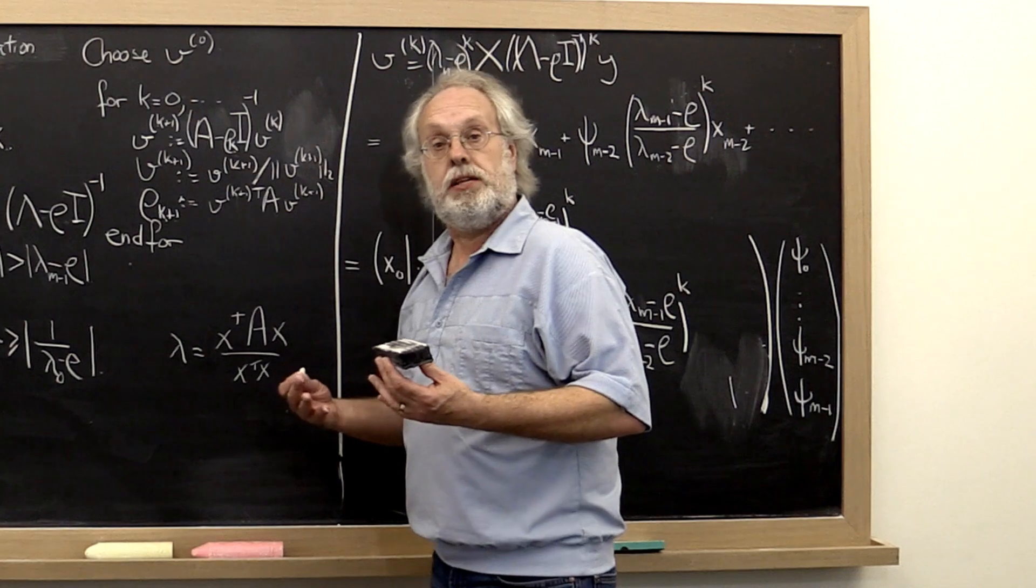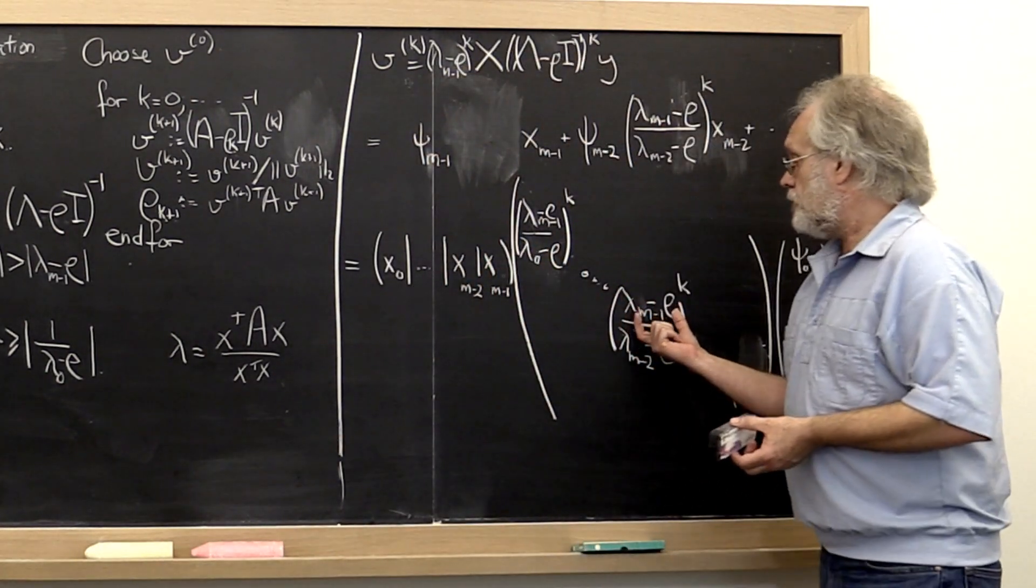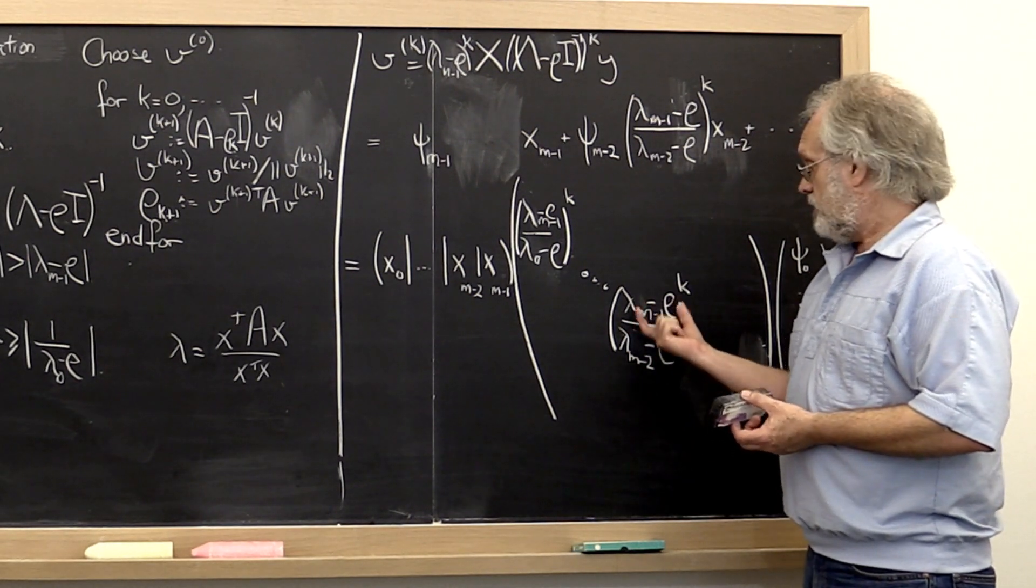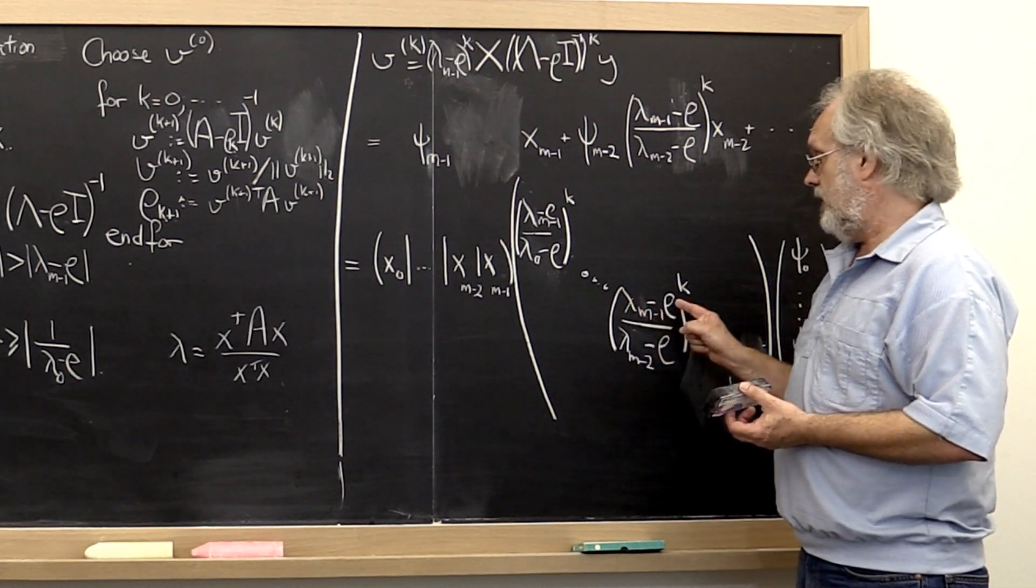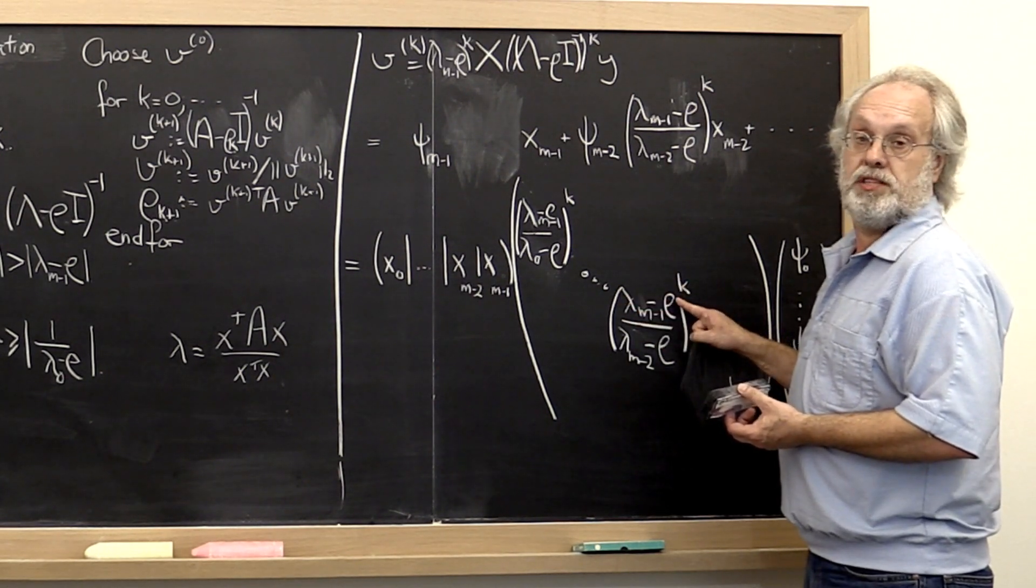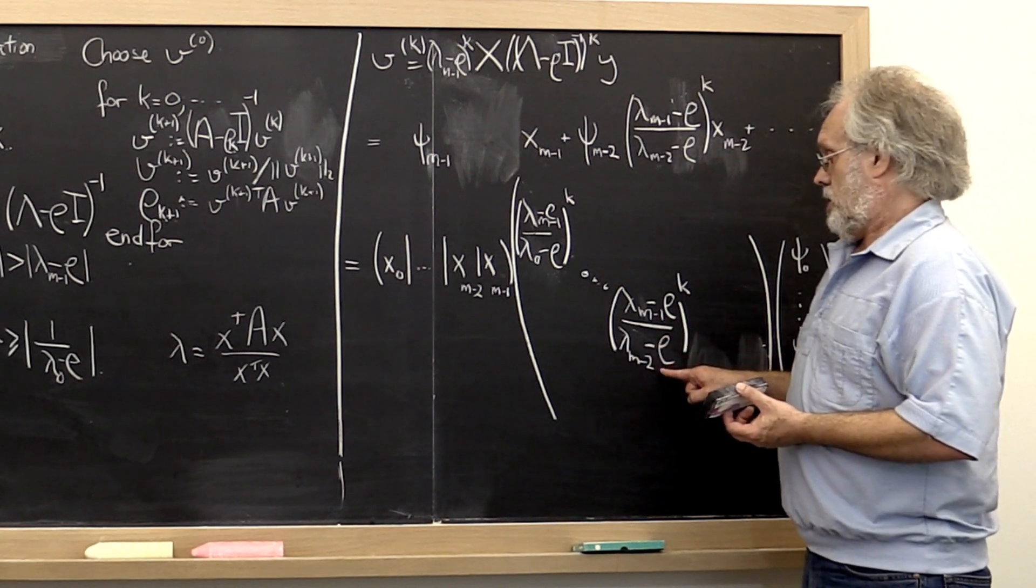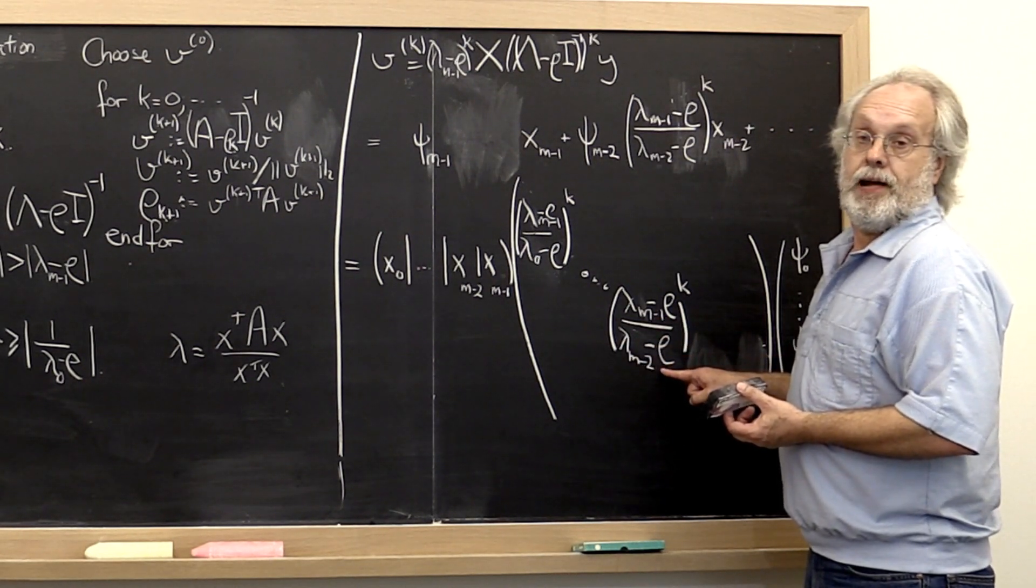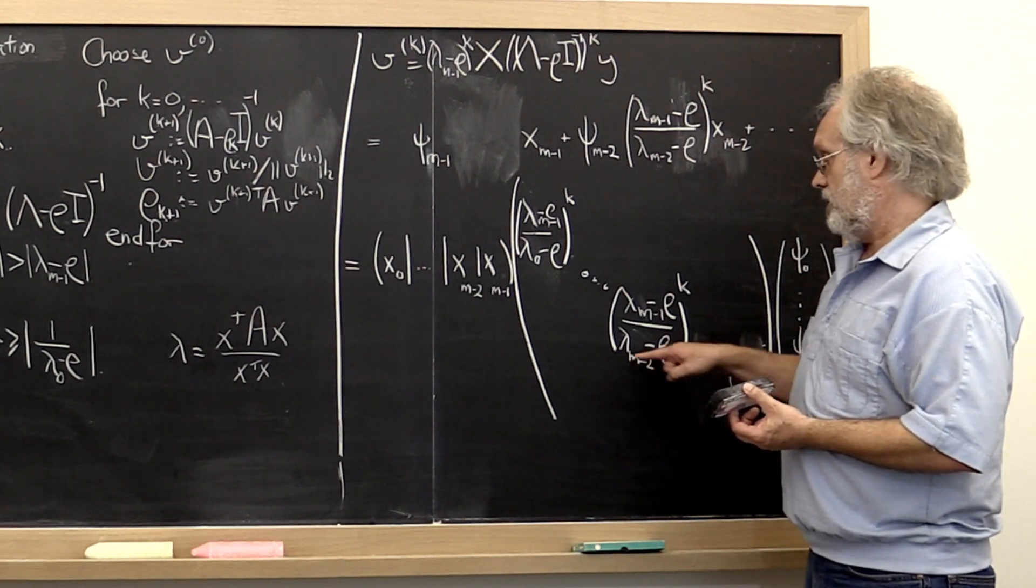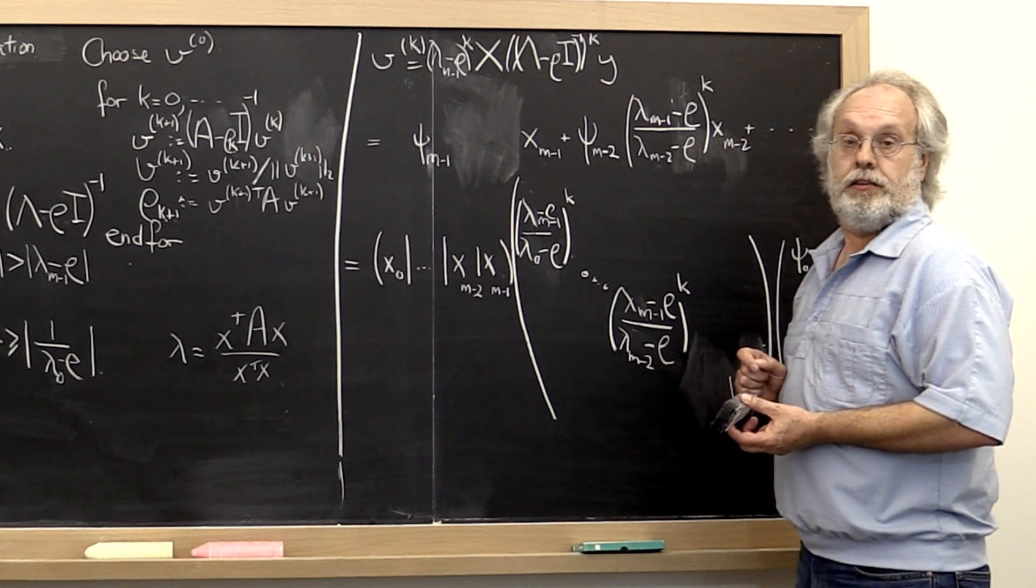And now we have something where the closer we get to our solution, the better this ratio becomes. Because in the limit, this right here becomes 0, and this right here becomes lambda m minus 2 minus lambda m minus 1, the distance between the smallest two eigenvalues.